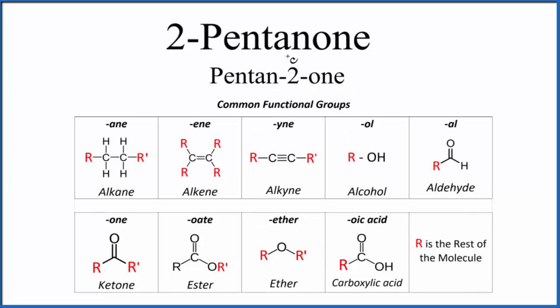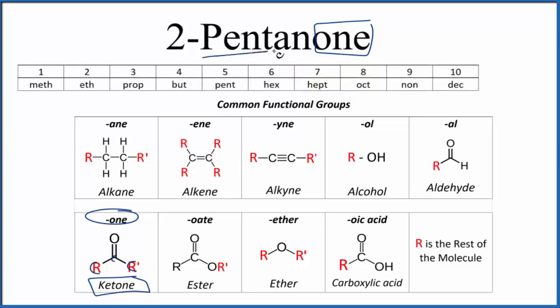So when we look at the name here, we have O-N-E at the end. When you see O-N-E at the end, you're thinking that you have a ketone. And a ketone has a carbon with a double bond, and then you have carbon atoms on either side of it. So we know we have a ketone and the pent right here, pent means five. So we're going to have a five carbon chain and we're going to have an oxygen bonded to a carbon and that carbon will have carbons on either side of it.